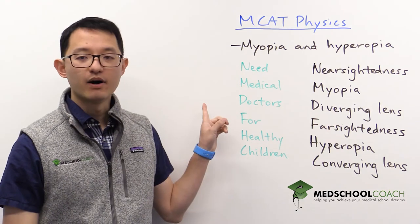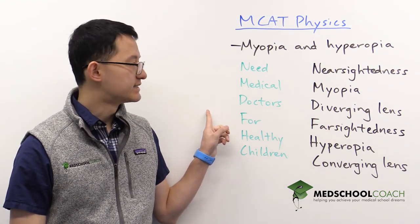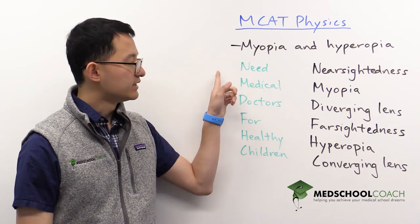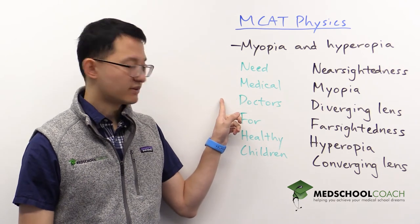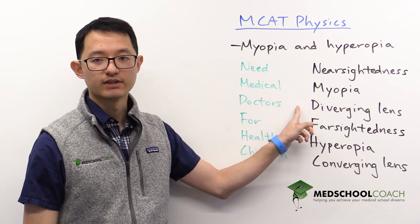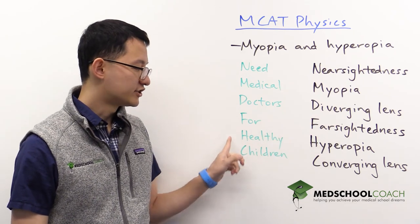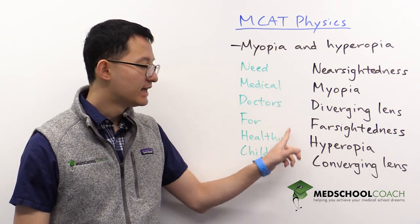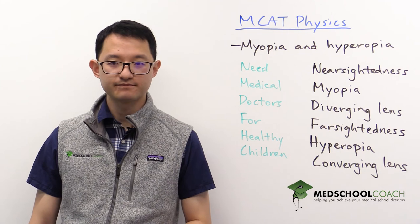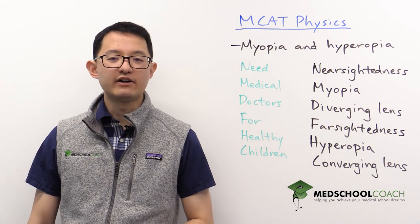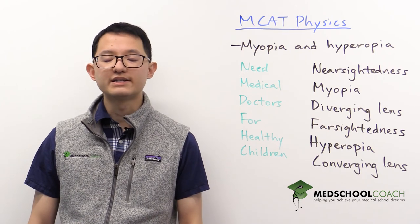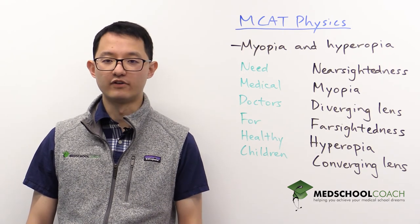Our mnemonic for memorizing this is 'need medical doctors for healthy children.' 'Need medical doctors' tells you that nearsightedness is the same as myopia and requires a converging lens. Hopefully this will help you keep track of whether an individual with myopia or hyperopia requires a diverging lens or a converging lens.